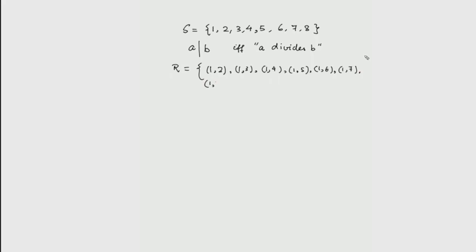Starting with 2: 2 does not divide 1 or 3 or 5 or 7, but 2 divides 4, 6, and 8, giving pairs (2,4), (2,6), (2,8). Then 3 divides 6, giving (3,6) and nothing else. Then 4 divides 8, giving (4,8). And 5, 7, 8 do not divide any other number in S. So we have the complete listing.